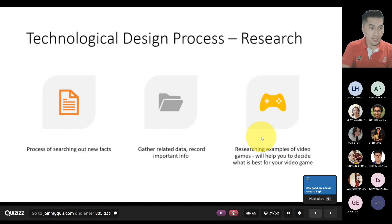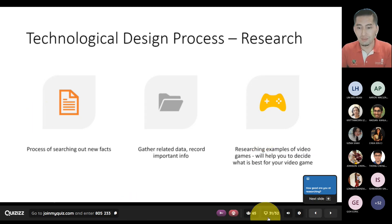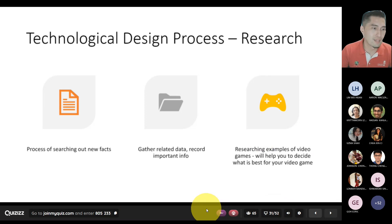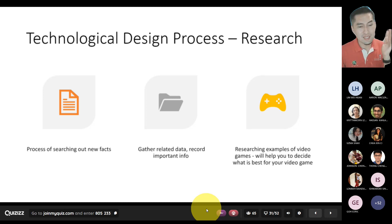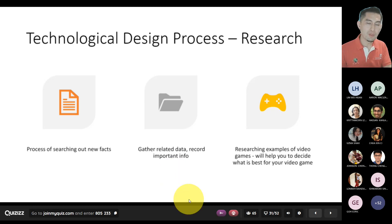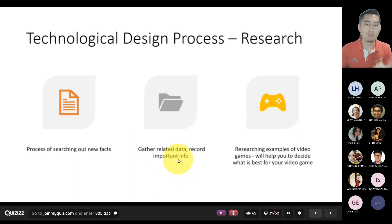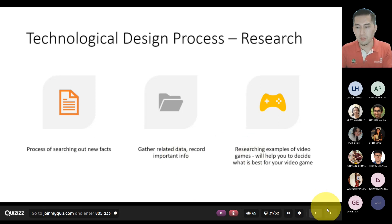Take that problem and break it down into smaller pieces — that's the first thing you need to do, otherwise you cannot solve it. The third step is you need to do research. You need to learn how to gather information, gather related data, important information, and more importantly, filter out what is needed, what is most important.